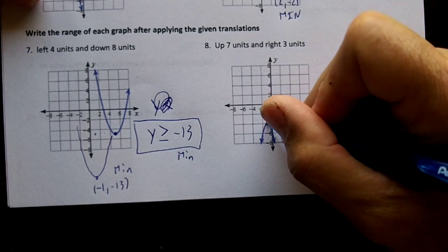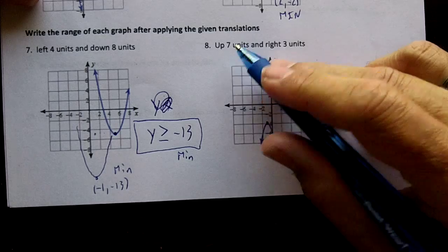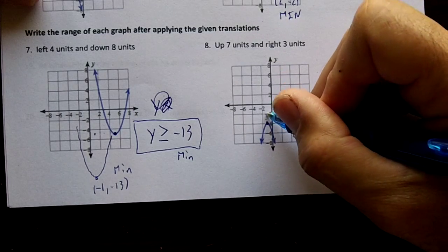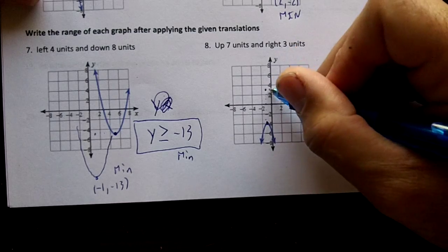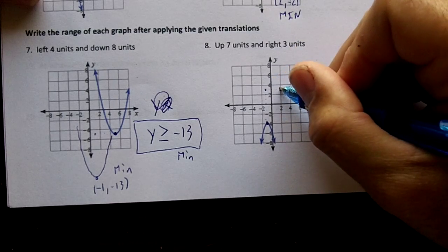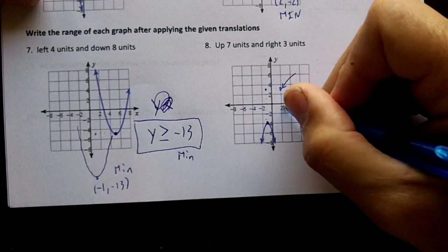Right here, our vertex is right here. We're going to go up seven units. So one, two, three, four, five, six, seven will be right here, to the right three. One, two, three. Our vertex would be over two, up three.